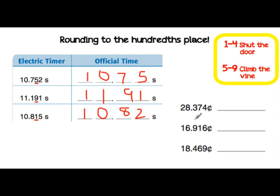It really doesn't make sense to say you're going to give someone $28.374. When we say money, we're always rounding to the hundredths place. So again, I'm going to underline the hundredths place. Looking at the number to the right of the hundredths place, we have a 4. That fits in our rule 1 through 4 — shut the door. So this is going to be $28.37.